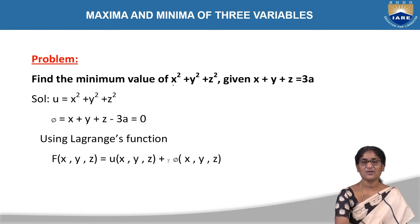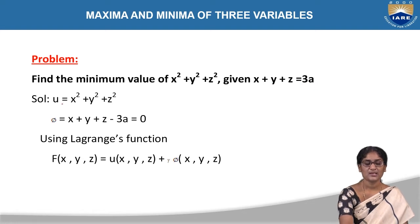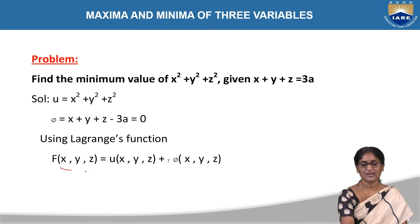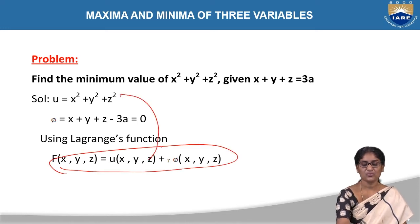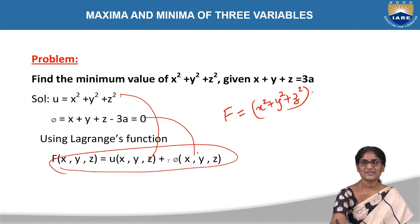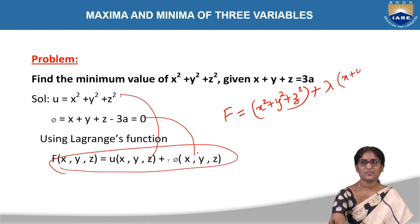Example 1: Find the maximum and minimum value of x² + y² + z², given x + y + z = 3a. Let u = x² + y² + z² and phi = x + y + z − 3a. Using Lagrange's method, we frame the Lagrange's function. Capital F(x, y, z) = x² + y² + z² + lambda · (x + y + z), where lambda is the constant and x + y + z is the given condition.